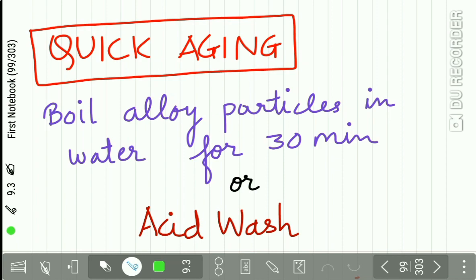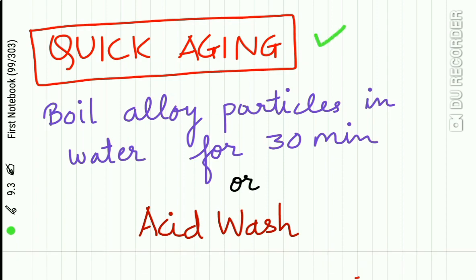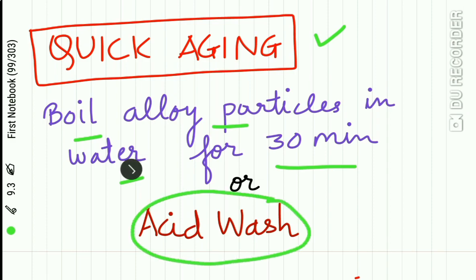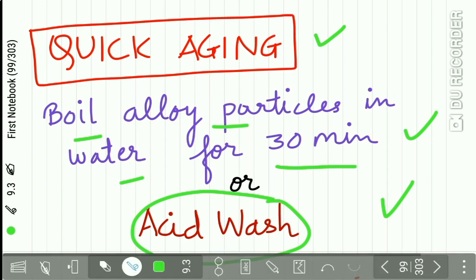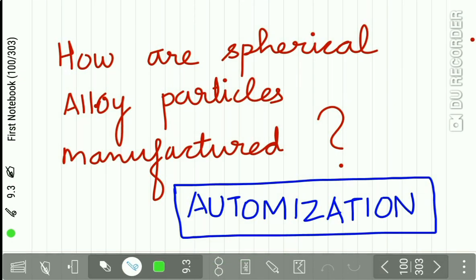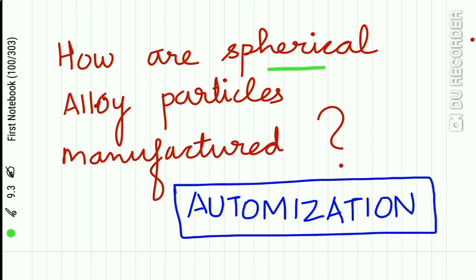There is a concept called quick aging. Quick aging of the alloy particles can be done by boiling the alloy particles in water for 30 minutes, or by acid wash. By these easy procedures, the aging of the alloy particles can be quickened. This is called quick aging.